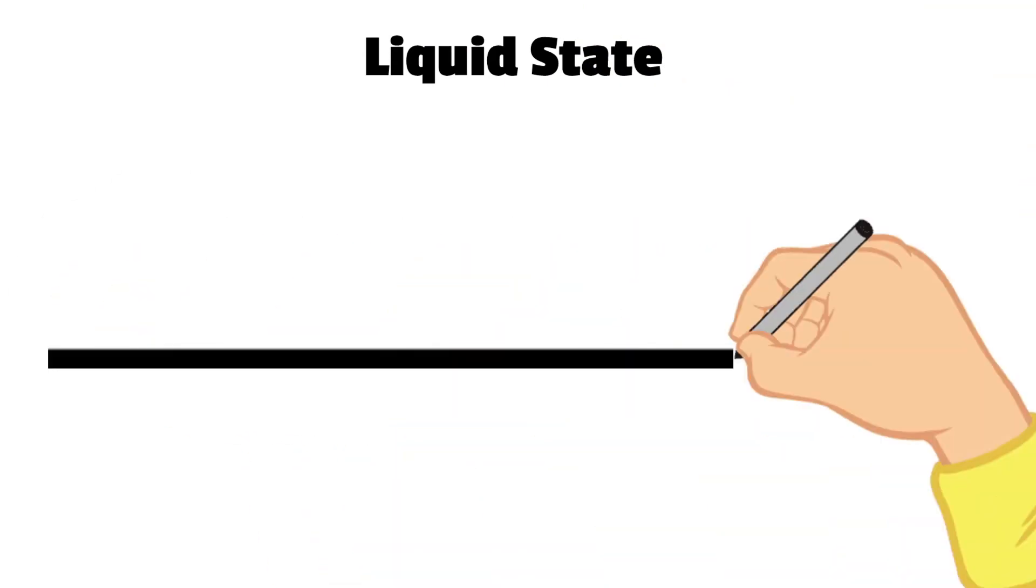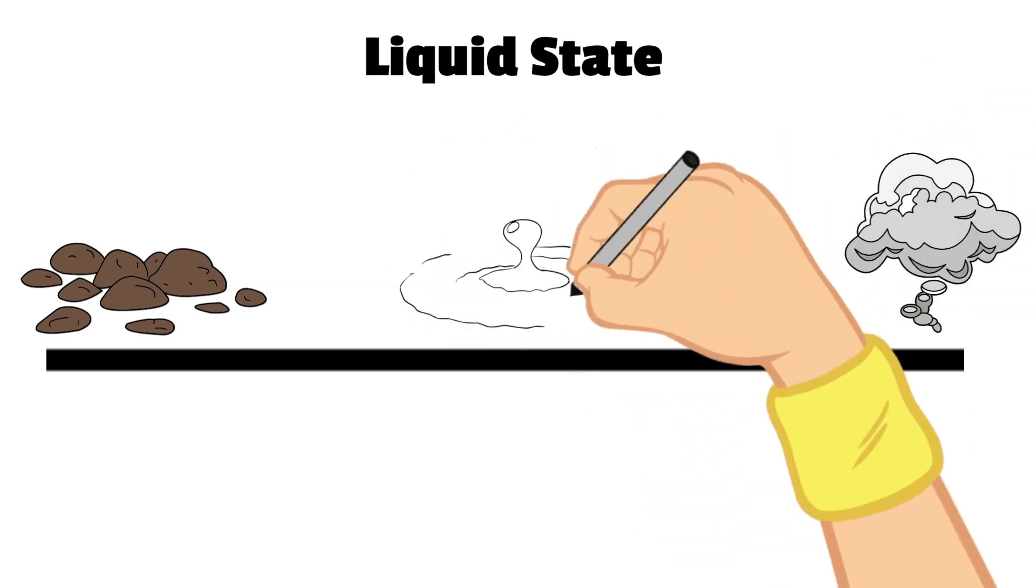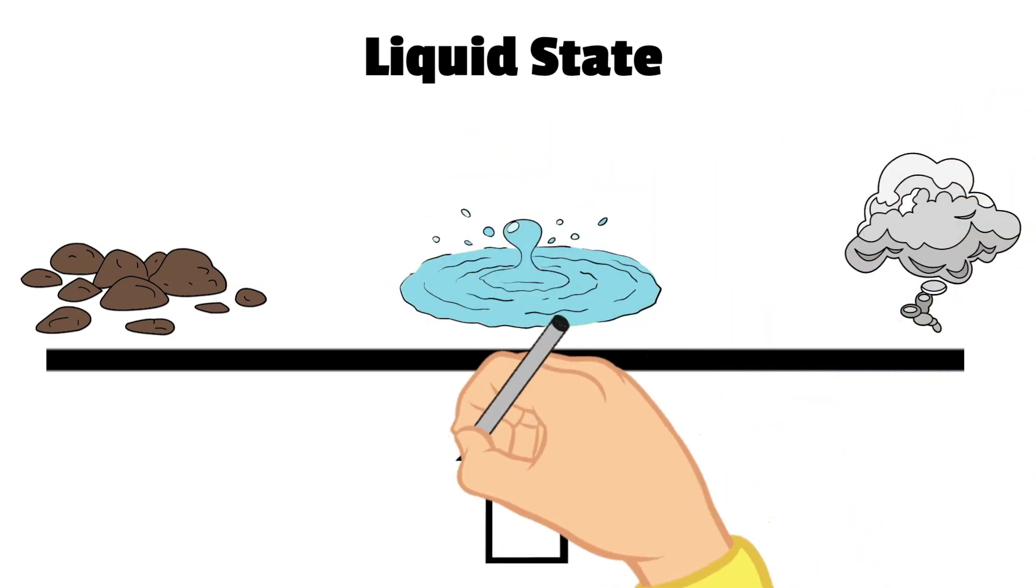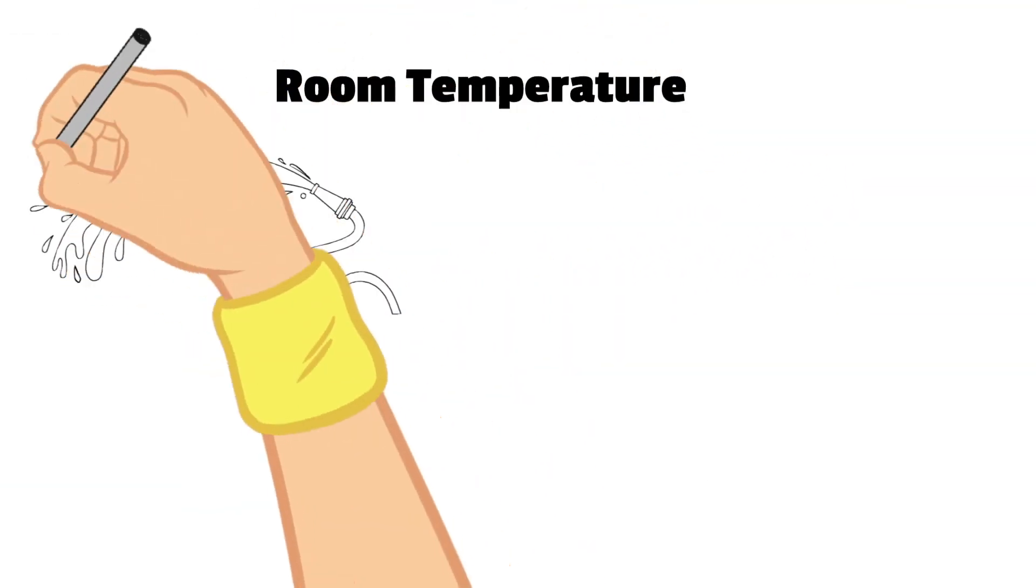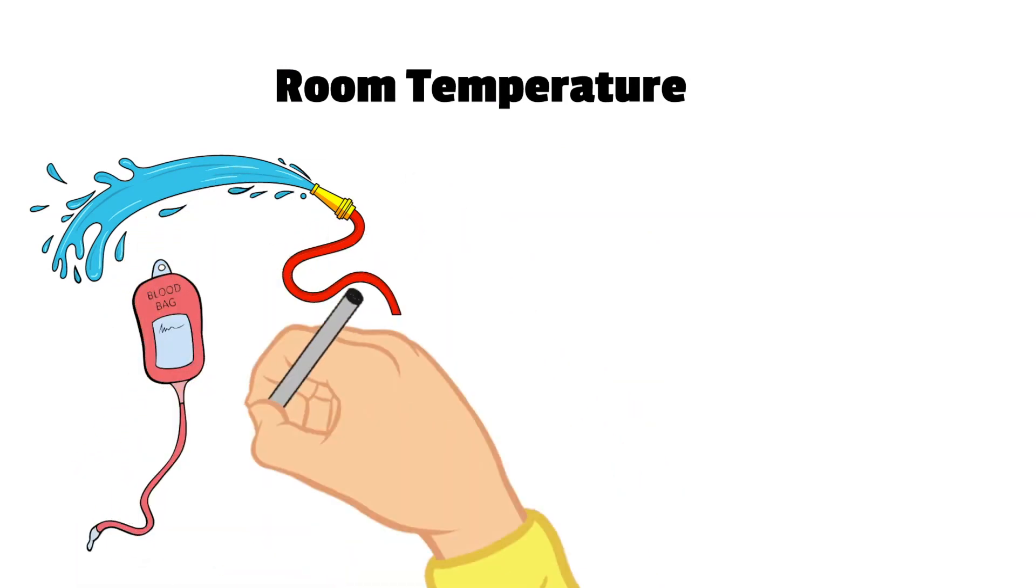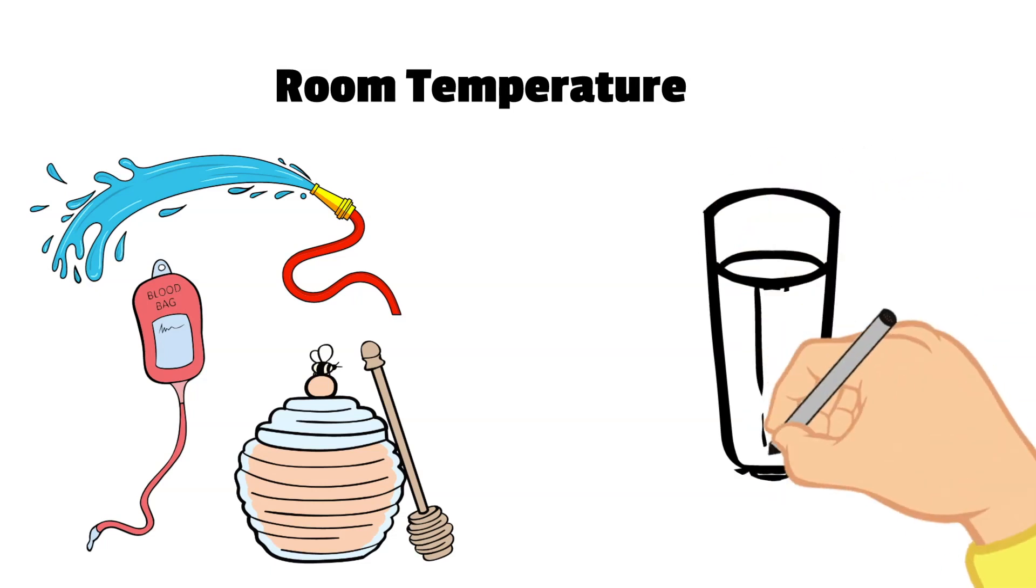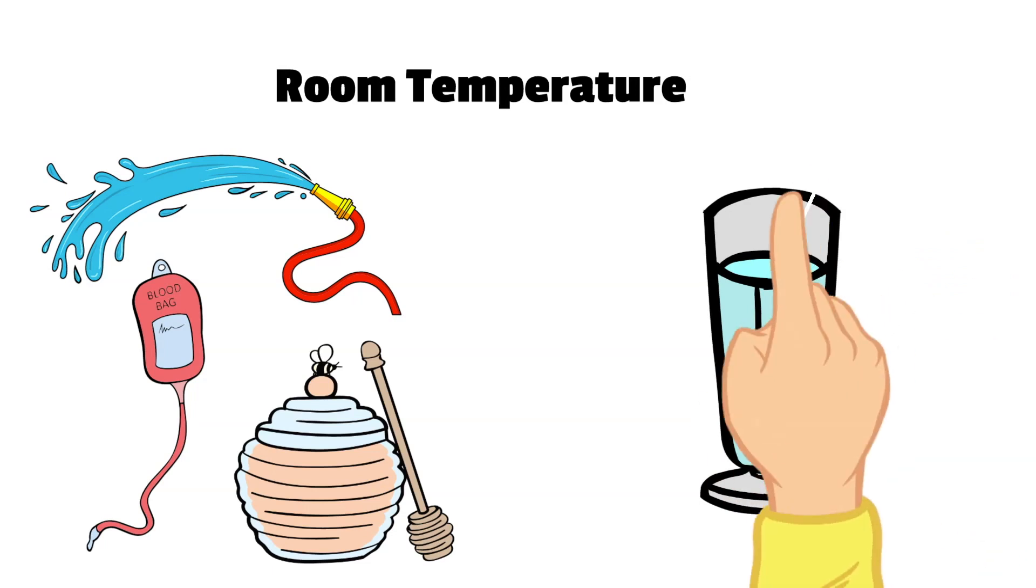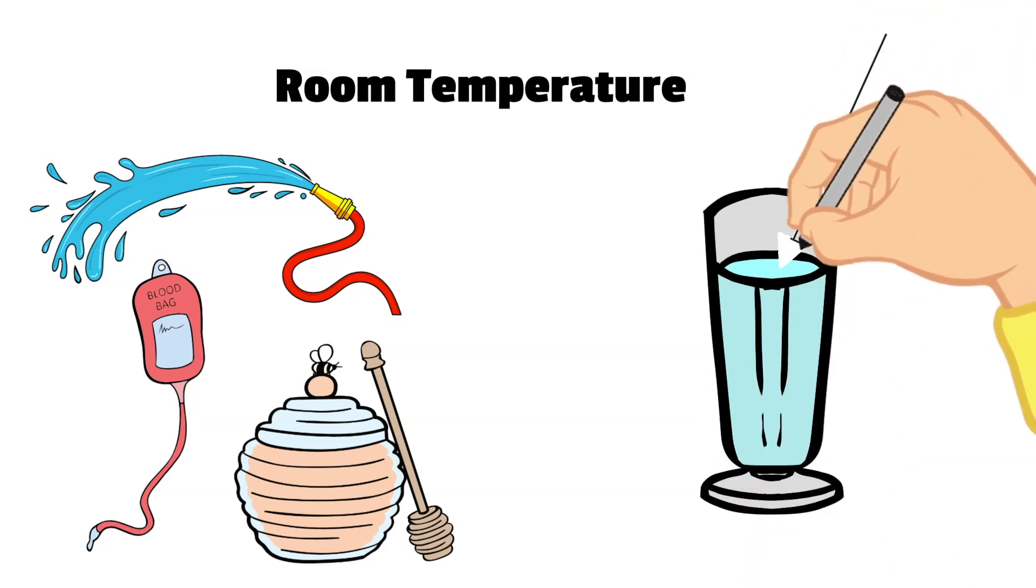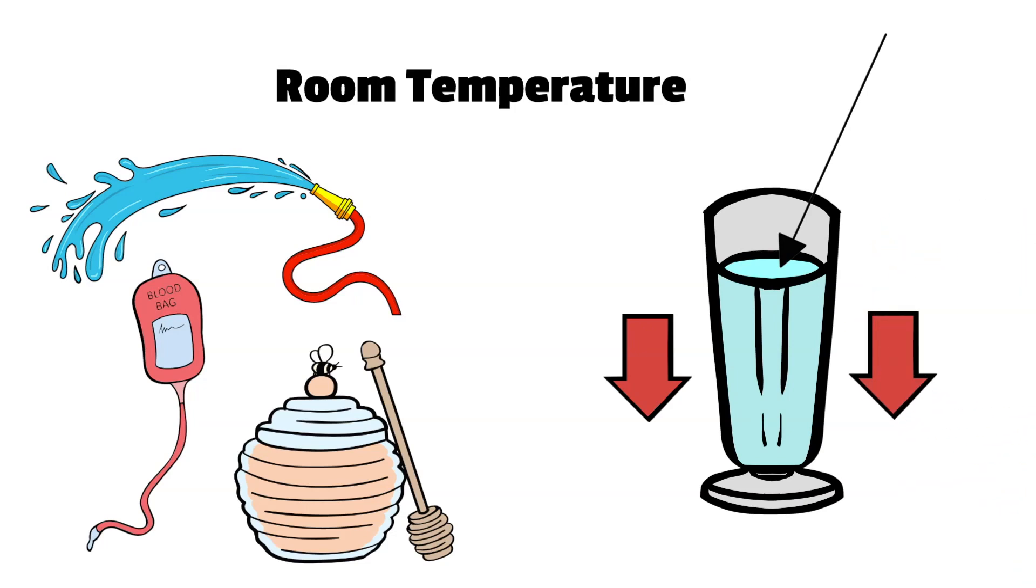Our next state of matter is the liquid state. Liquids are found between the solid and gas states. Examples of liquids at room temperature include water, blood, or even honey. The main characteristic of a liquid is that they fill the container that they are placed in. It's important to note that when you pour liquid into a container you may notice that the surface of it is flat. This is due to gravity pulling on the liquid molecules.